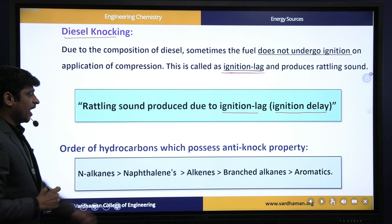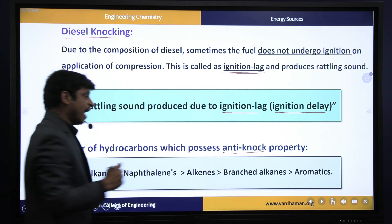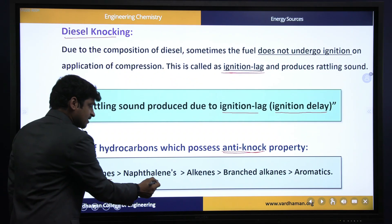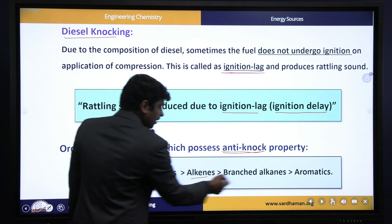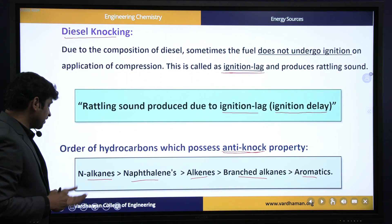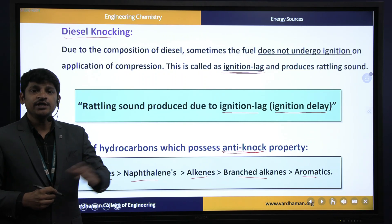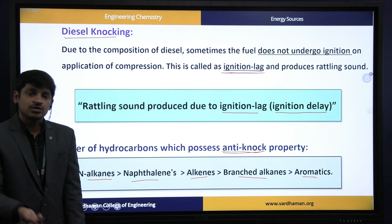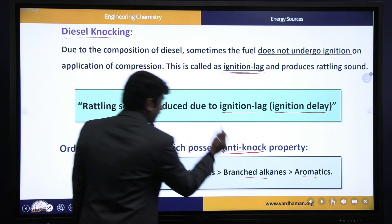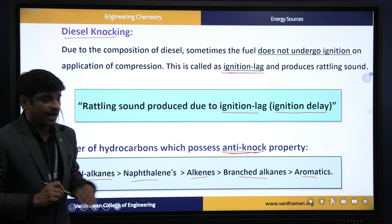The order of hydrocarbons that possess anti-knock property for diesel is given as: N-alkanes, naphthalene, alkenes, branched alkenes, and aromatics. A diesel sample with the maximum percentage of N-alkanes is considered high-quality diesel because N-alkanes will not cause knocking. This is the order of anti-knocking property: N-alkanes, naphthalene, alkenes, branched alkenes, and aromatics.